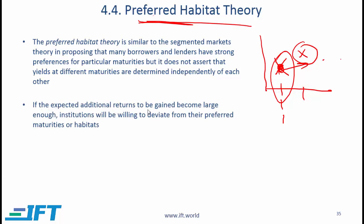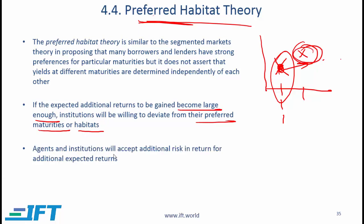If the expected additional returns to be gained become large enough, institutions will be willing to deviate from their preferred maturities or habitats — that's why this is called the preferred habitat theory. Agents and institutions will accept additional risk in return for additional expected returns. This is consistent with finance theory: if an institution is taking on a little higher risk by getting into a different time segment, but is getting a tremendous amount of compensation, then it will possibly move to a different segment.